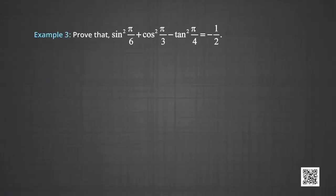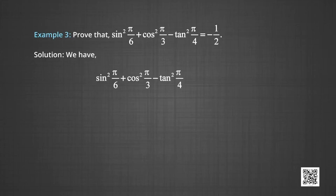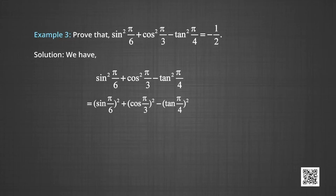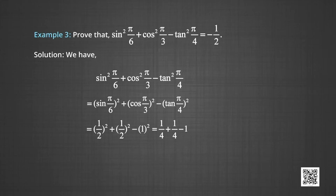In example 3, we find the value of sin²(π/6) + cos²(π/3) − tan²(π/4), and we will show this equals −1/2. Substituting the known values: (1/2)² + (1/2)² − 1² = 1/4 + 1/4 − 1 = 1/2 − 1 = −1/2.